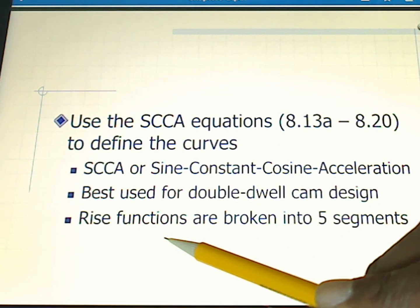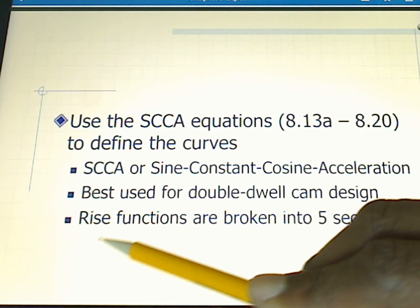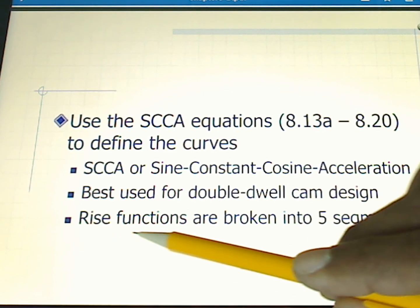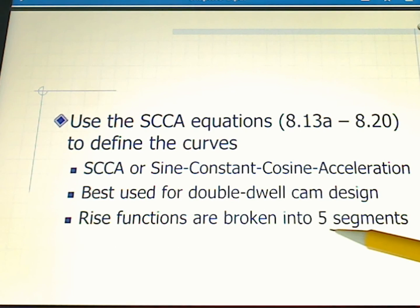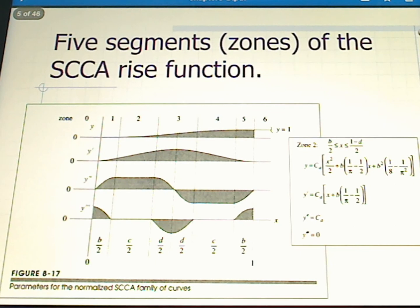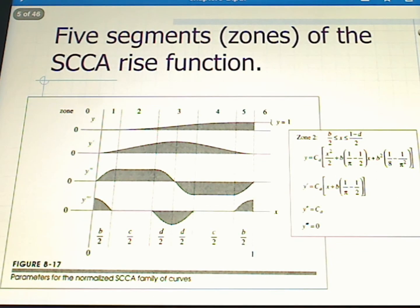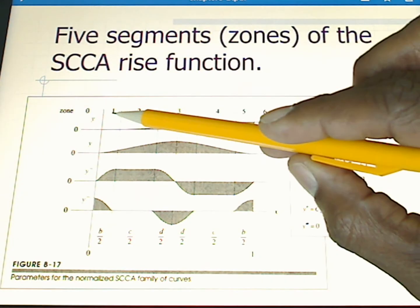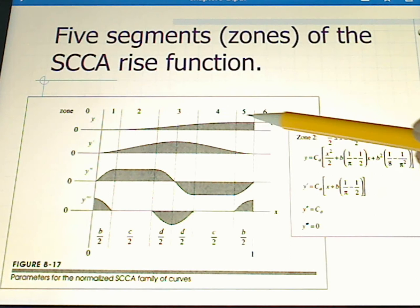The rise function or the fall function - the rise and the fall are the same equations, just inverted. The rise function is broken into five different segments. Here we have the five segments of the SCCA rise function. These segments can also be called zones. You see them here: one, two, three, four, five.